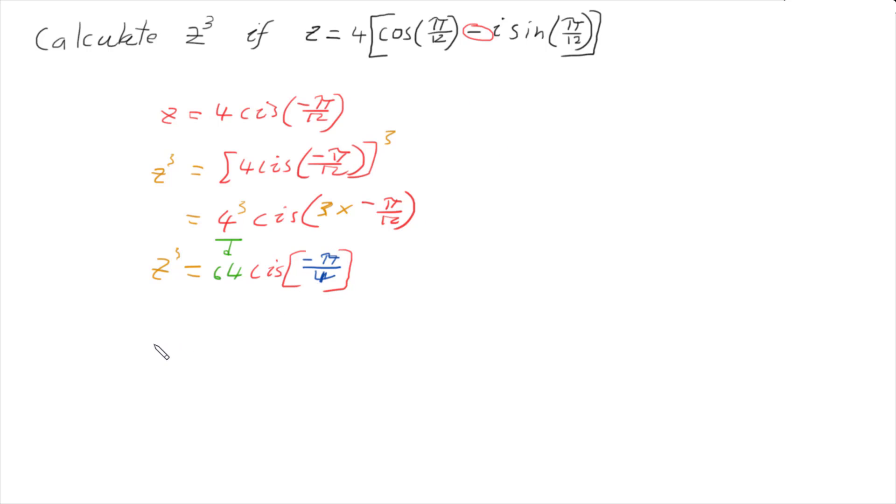Should put it back in our original form. So that gives us that z cubed is going to be 64 outside of cos, and we can make the angle positive while we do this too, pi over 4 minus i sine pi over 4. And we are done.